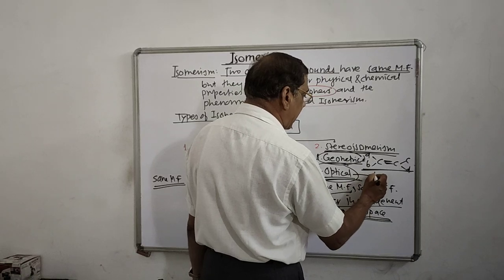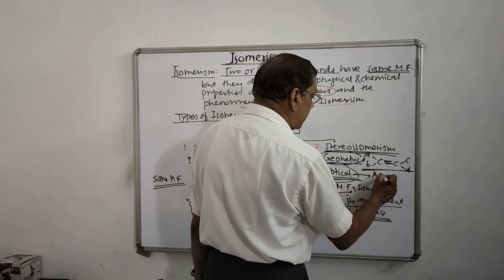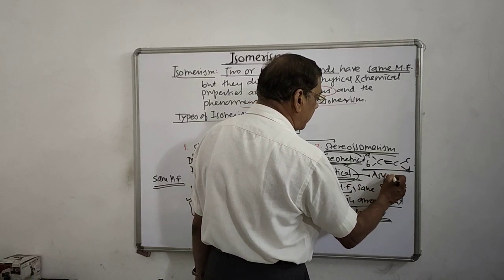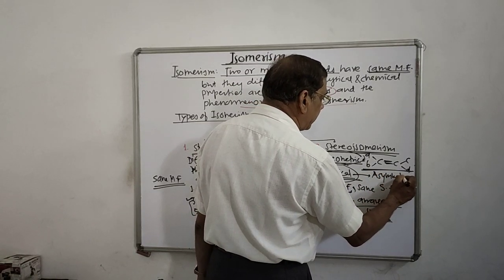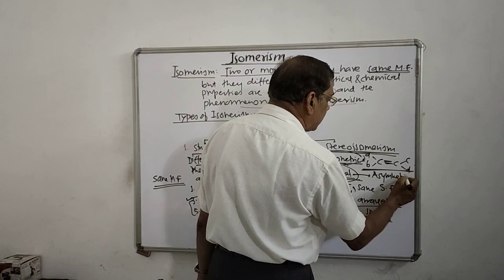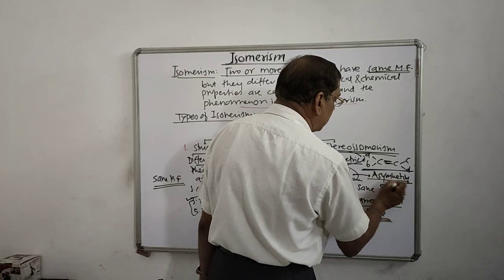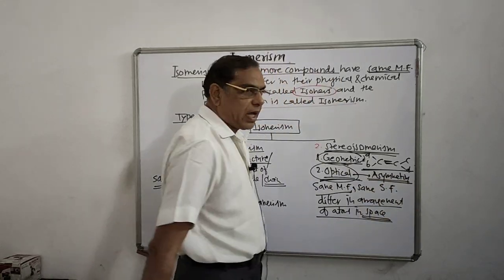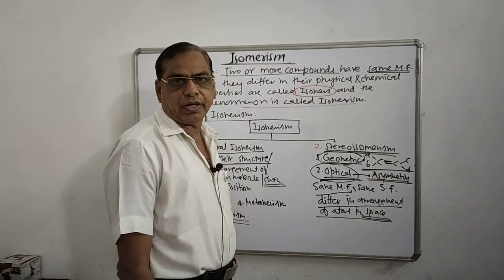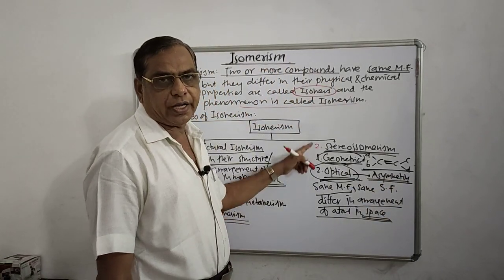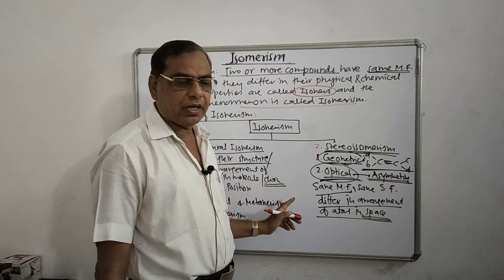For optical isomerism, compounds have the same molecular formula and same structural formula but differ in their arrangement of atoms around an asymmetric carbon atom. Optical isomerism requires an asymmetric, unsymmetrical arrangement.